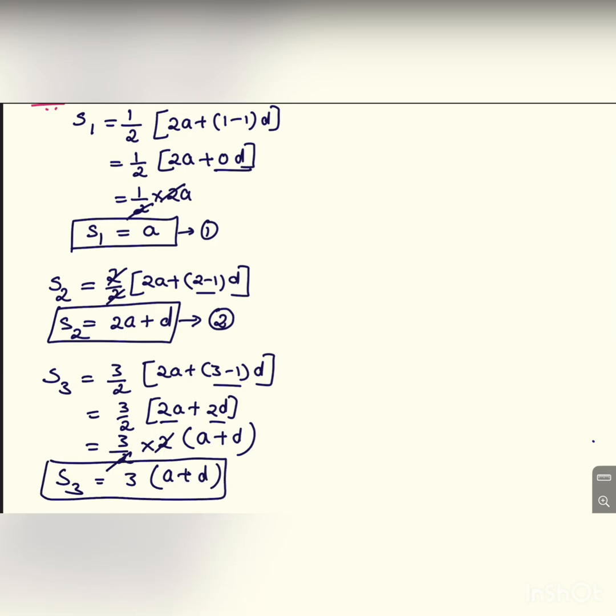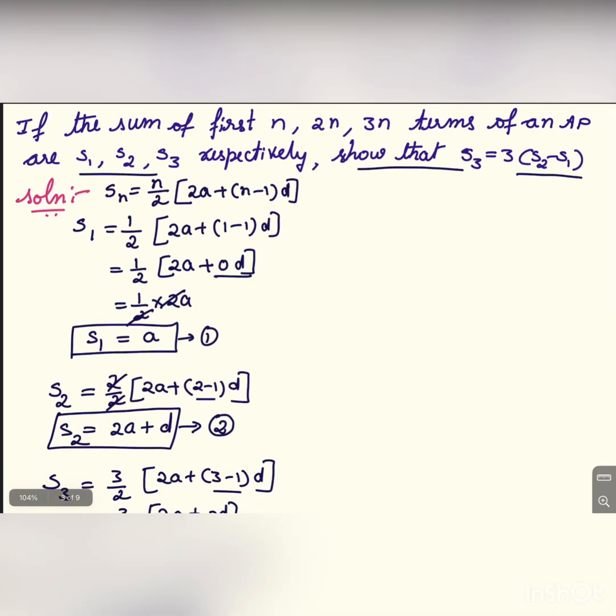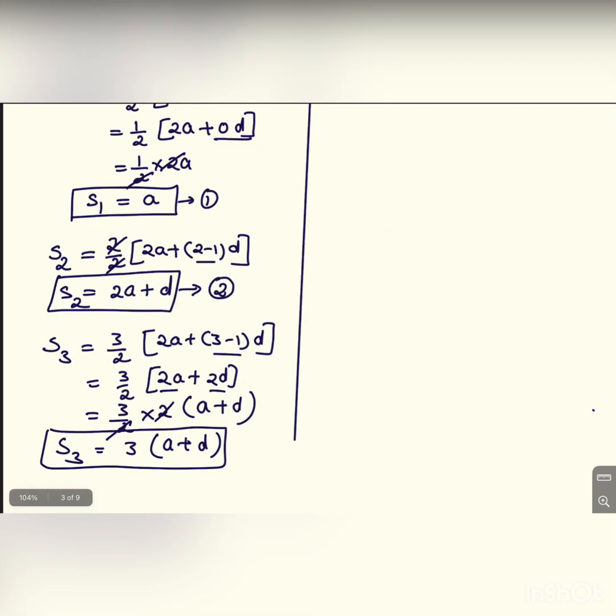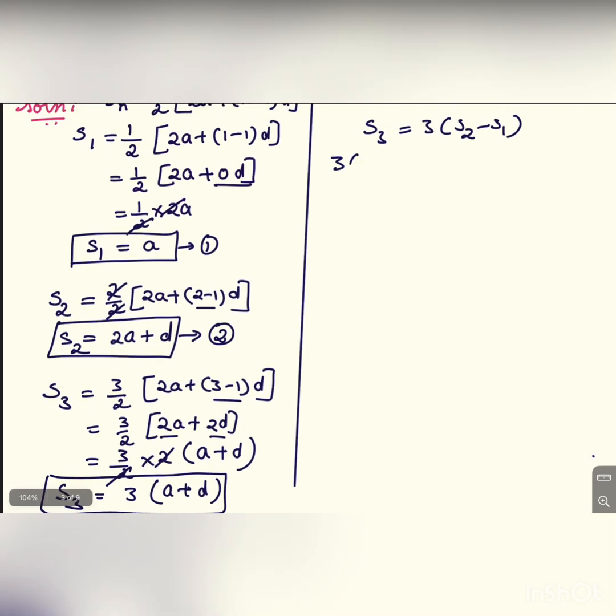Now what we are supposed to prove? We have to prove that s3 is equal to 3 into s2 minus s1. Let us check that. s3 is 3 into a plus d is equal to 3 into s2 is 2a plus d minus s1 is a.